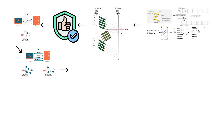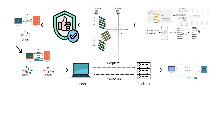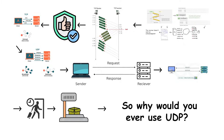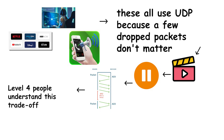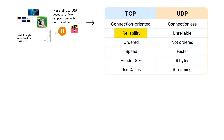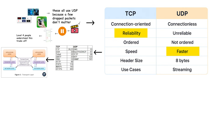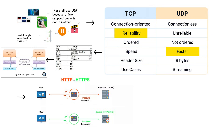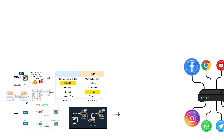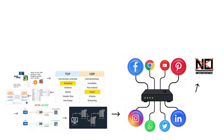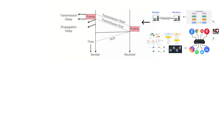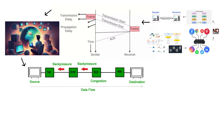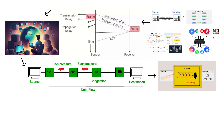There's also UDP — User Datagram Protocol. UDP is connectionless: it just fires data out without establishing a connection, without checking if it arrived, without caring about order. So why use UDP? Speed. Video streaming, online gaming, and voice calls all use UDP, because a few dropped packets don't matter — you'd rather have the video keep playing than pause while TCP retransmits every single lost packet. Level 4 people understand this trade-off, and they know port numbers, which the transport layer uses to identify specific applications: HTTP uses port 80, HTTPS uses port 443, email uses port 25. The transport layer also handles flow control — if the sender transmits faster than the receiver can process, the receiver tells the sender to slow down — and congestion control, detecting when the network is overloaded and reducing transmission speed.